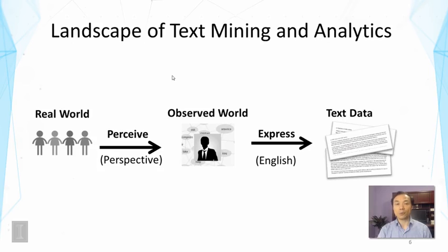This observed world can often be biased. It can be represented, for example, as entity-relation graphs or more generally using a knowledge representation language. This is basically what a person has in mind about the world. The human would then express what the person has observed using a natural language such as English, and the result is text data. The person could have used a different language, in which case we might have text data of mixed or different languages.